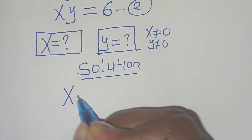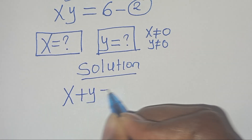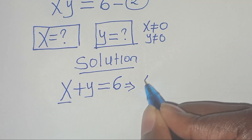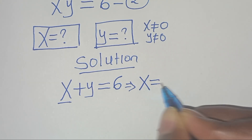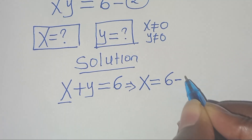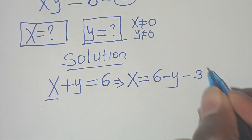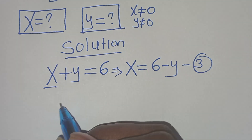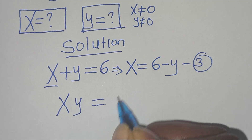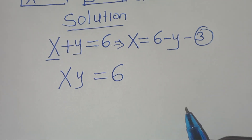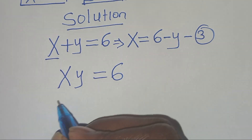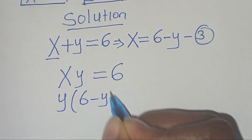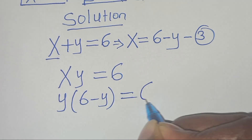From equation 1, which is x plus y equals 6, let's make x the subject of the formula, so that x equals 6 minus y — let's call this equation 3. Now let's substitute equation 3 into equation 2, which is x times y equals 6, so substituting x we have y multiplied by (6 minus y) equals 6.